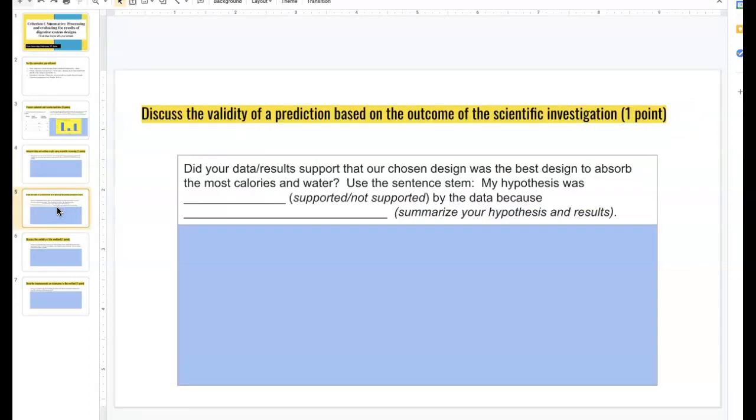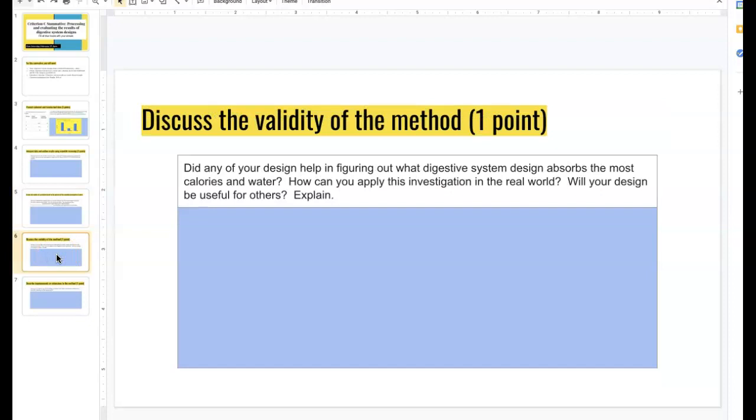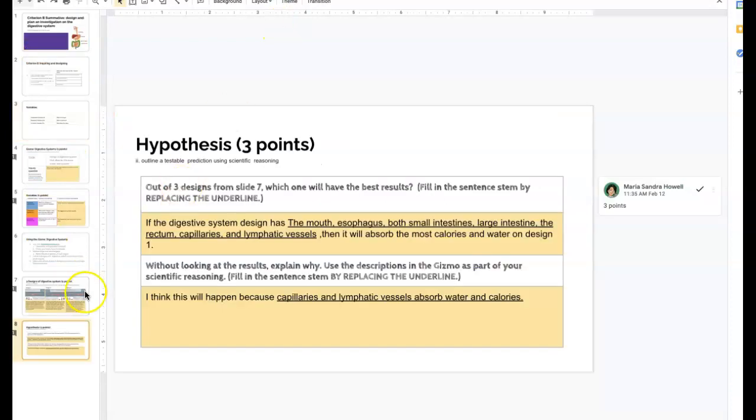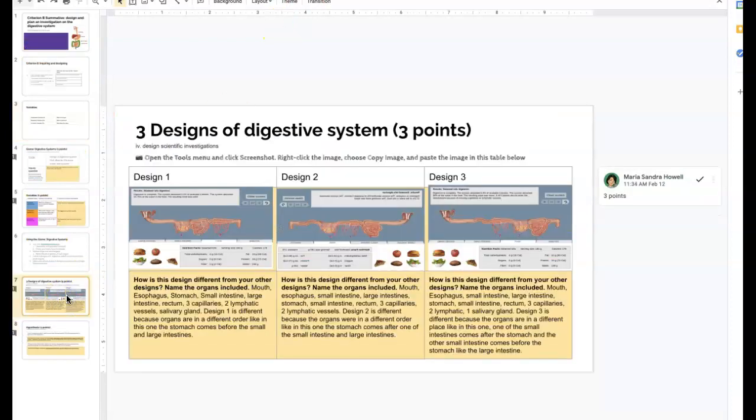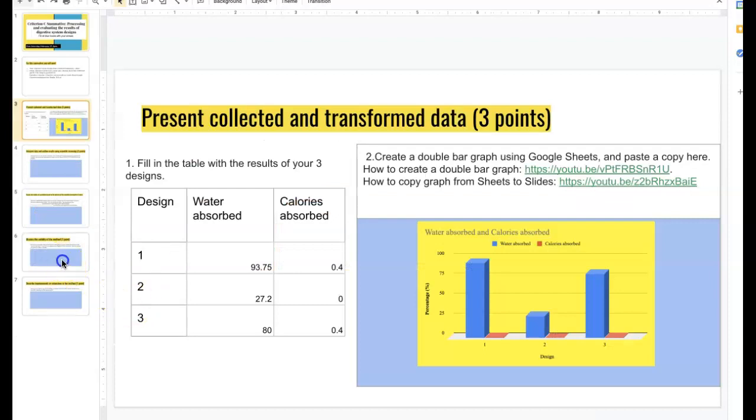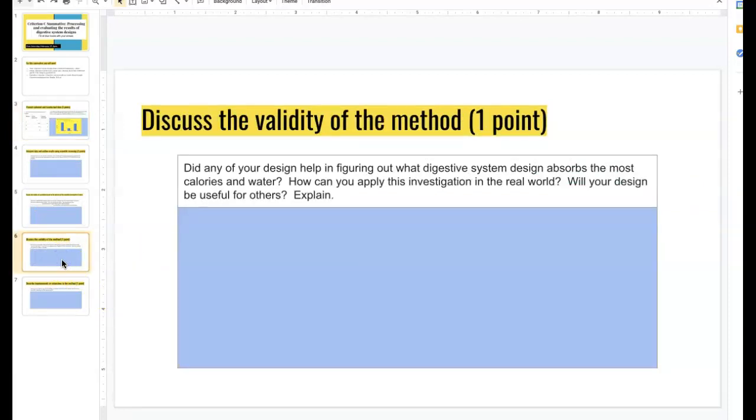Slide 6. Validate the method. Now with your designs and seeing the results, looking at your designs, here's your designs. If you bring these designs to the real world, like to a surgeon who's trying to help someone with digestive system problems, if you bring these designs to the real world, will it be helpful? How can you apply this to the real world? Will it be helpful for others? For this person, you'll probably say it's not helpful because although a lot of water was absorbed, calories were not absorbed, and the body still needs calories to function. That's the validity of the method.